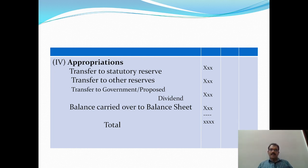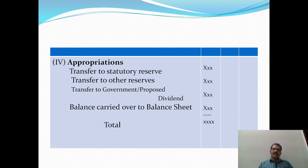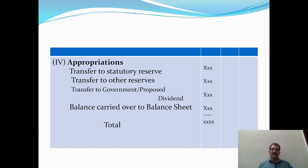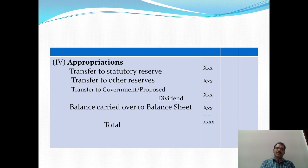Under Appropriations, the important items include: transfer to Statutory Reserve, where a fixed percentage of profit is transferred as required; transfer to other reserves such as General Reserve; and transfer to government for proposed dividends. The remaining balance after all these appropriations is carried over to the balance sheet. This completes the format of the profit and loss account.